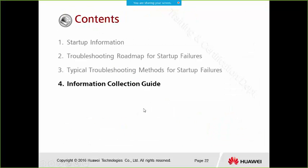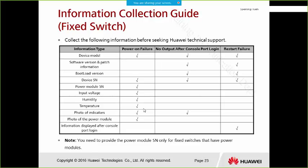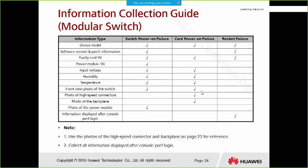When contacting Huawei support, collect the following information: device model, software version or patch information, and the serial number (SN). For modular switches, additional specific information should also be collected.